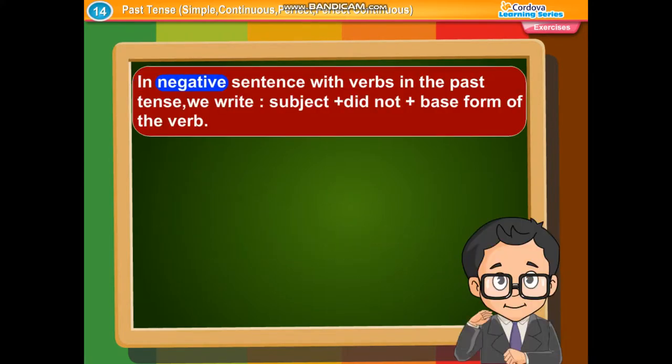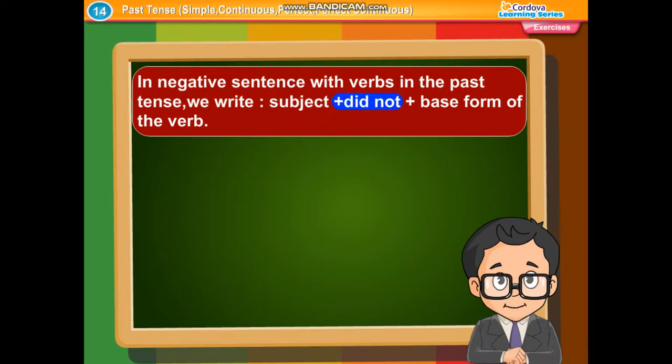Simple past tense also expresses an action that took place at some particular time in the past and is over now. Example: She applied for admission last week. It is used to narrate a story. Example: Once upon a time there lived a prince. In affirmative sentences in the past tense, we write: subject plus simple past tense form of the verb with all subjects. Examples: They played the match. The monitor made a list of students. In negative sentences with verbs in the past tense, we write: subject plus did not plus base form of the verb.